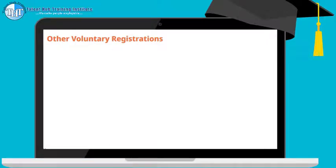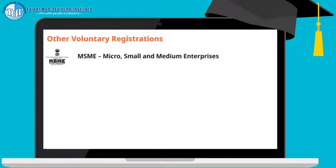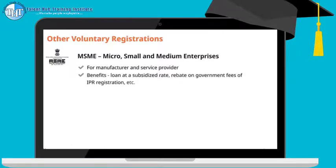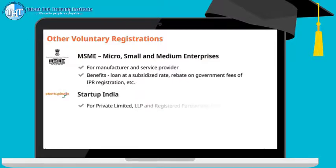Other registrations are voluntary and not mandatory but beneficial for startups. MSME (Micro, Small and Medium Enterprises) registration is for the promotion and growth of businesses operating at small or medium scale. Only manufacturers and service providers can register; an entity carrying only a trading activity is not eligible. The government has categorized entities on the basis of investment as micro, small, and medium enterprises. Registered entities can avail benefits such as loans at subsidized rates, a specified percentage of rebate on fees for intellectual property registration, and protection against delayed payments from customers.